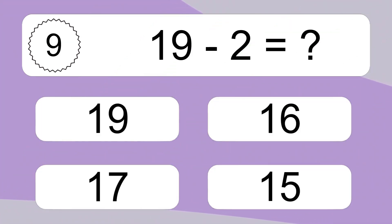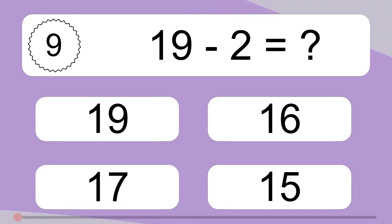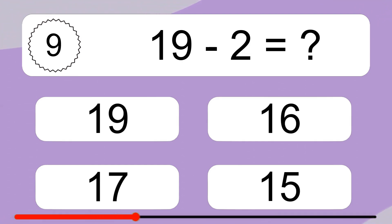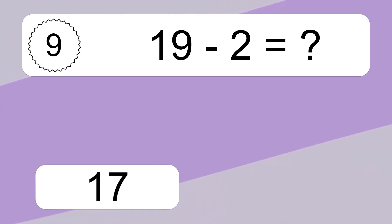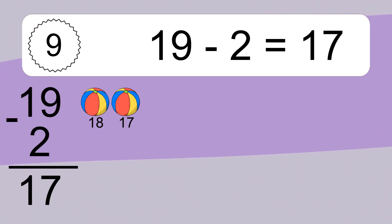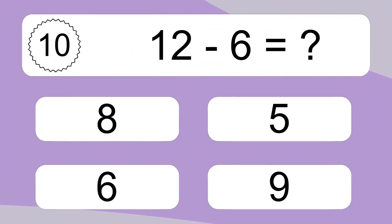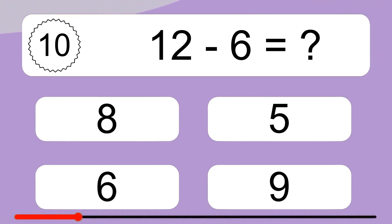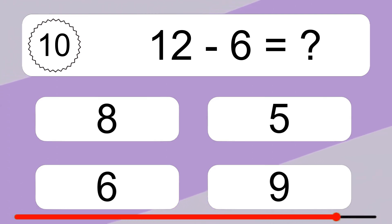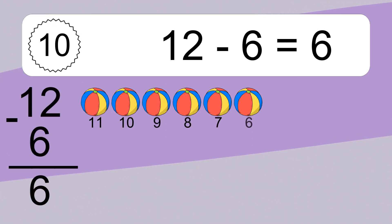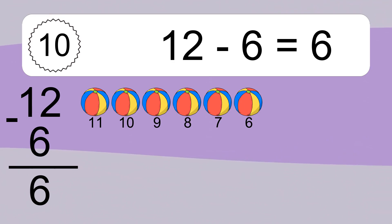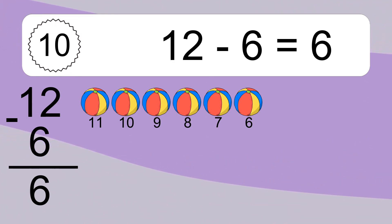19 minus 2 equals what? 19 minus 2 equals 17. Let's count it: 18, 17. 12 minus 6 equals what? 12 minus 6 equals 6. Let's count it: 11, 10, 9, 8, 7, 6.